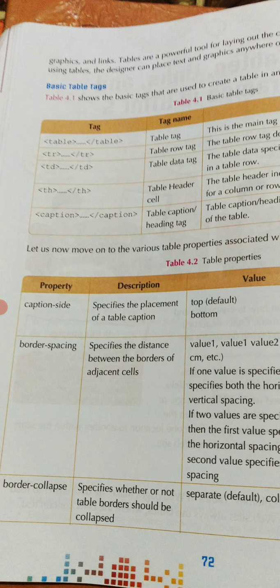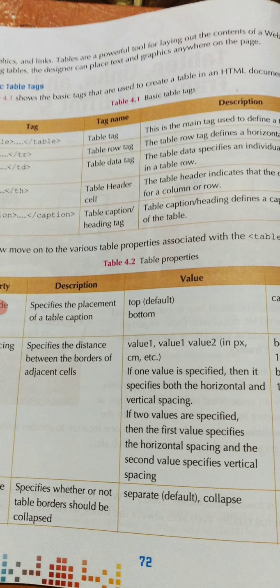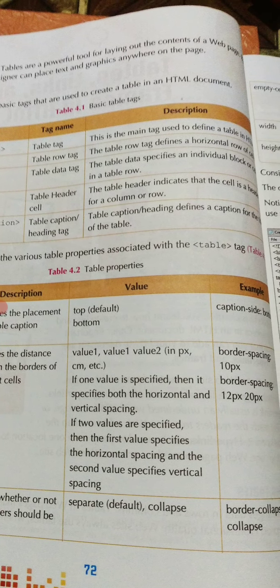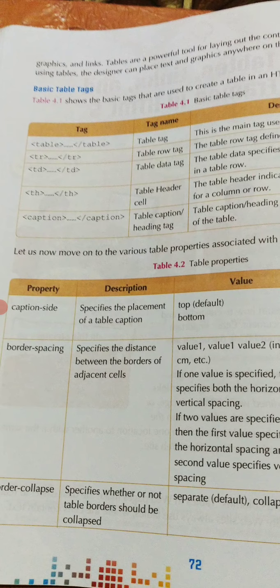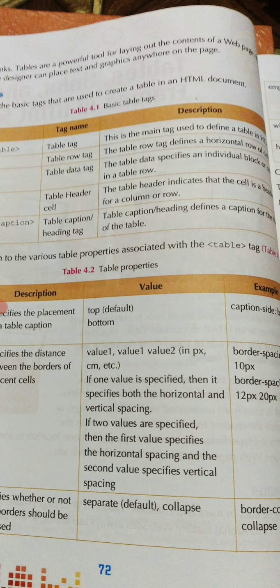The third tag is TD — the table data tag. The table data tag specifies an individual block or cell in a table row. TD helps the user to keep information in a particular individual block, not multiple blocks.